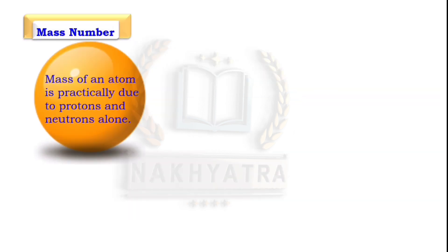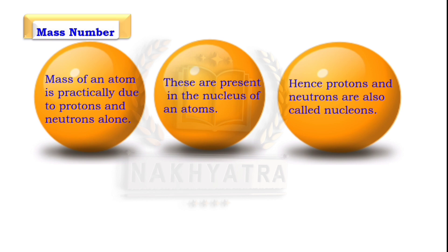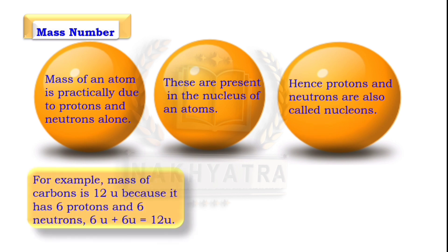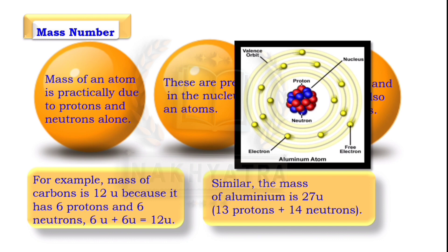The mass of an atom is practically due to protons and neutrons alone, which are present in the nucleus. Hence, protons and neutrons are also called nucleons. For example, the mass of carbon is 12u because it has 6 protons and 6 neutrons (6u + 6u = 12u). Similarly, the mass of aluminium is 27u because it has 13 protons and 14 neutrons (13u + 14u = 27u).